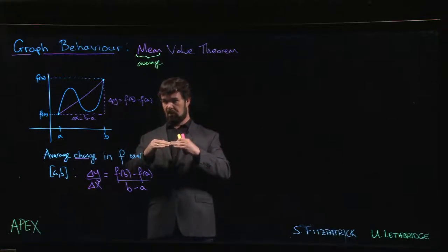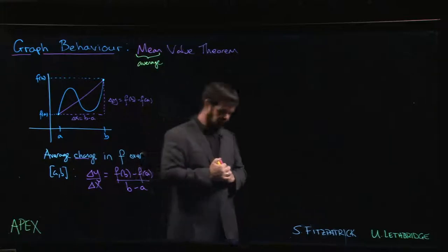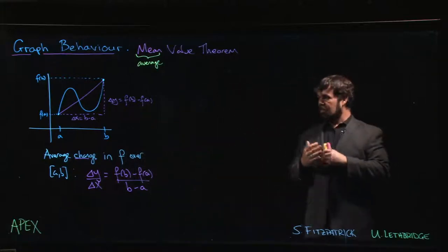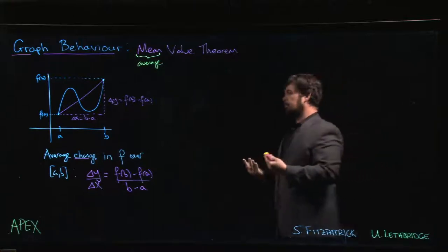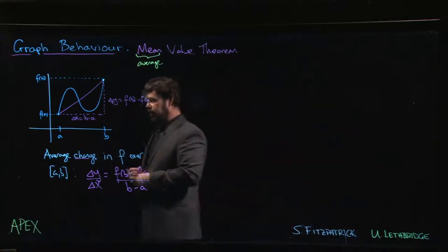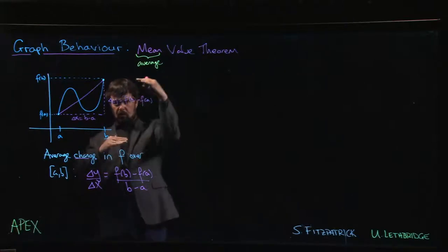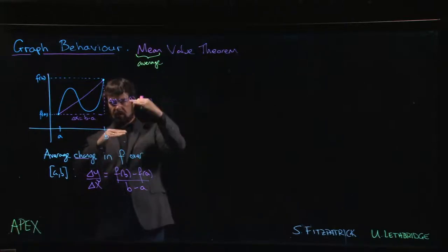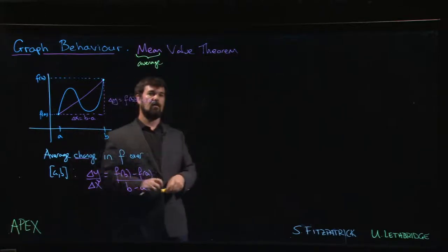But your speed is not going to just suddenly jump from 50 kilometers an hour to 150 kilometers an hour—that would have serious consequences for both you and your vehicle. We assume that change happens gradually, and that means if you're changing from a smaller rate of change to a larger rate of change, somewhere in between you're going to hit that average rate of change. That's what the Mean Value Theorem is saying.